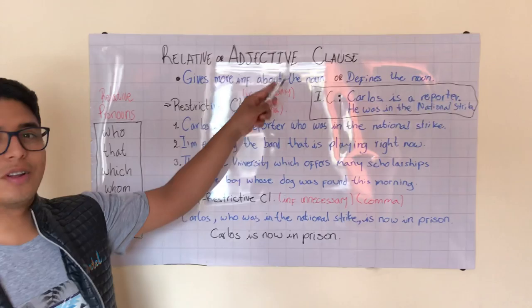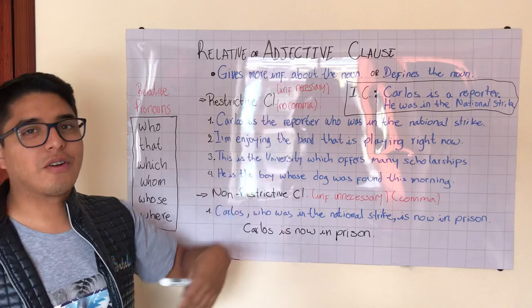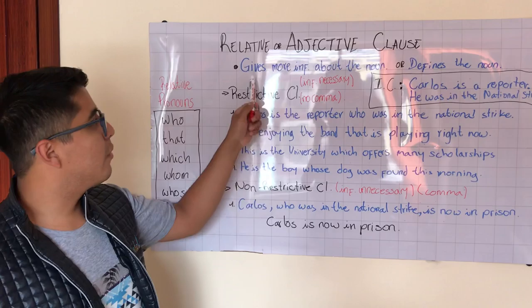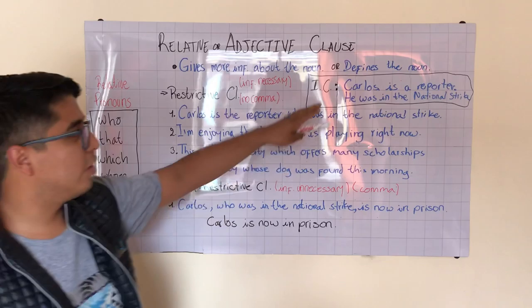Hello everybody. In this lesson I'm going to explain the use of adjective clauses, also called relative clauses. You may find them in different books as adjective clauses or as relative clauses. These relative or adjective clauses give us information about the noun — they modify and define the noun.